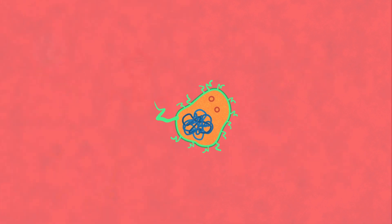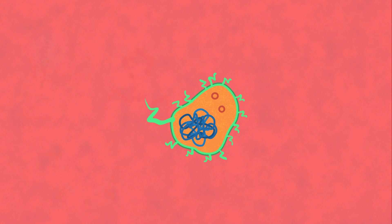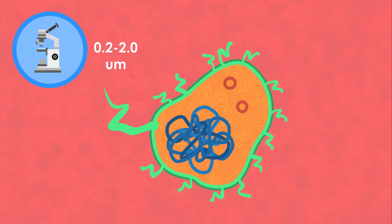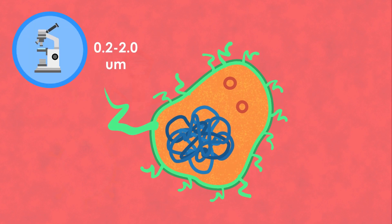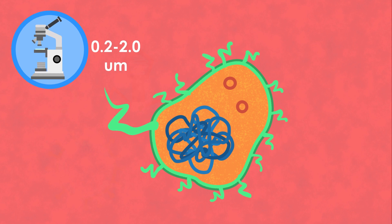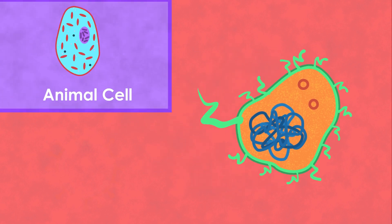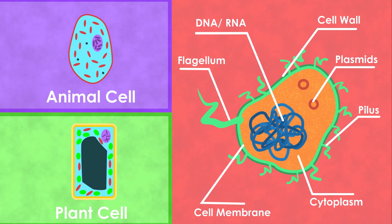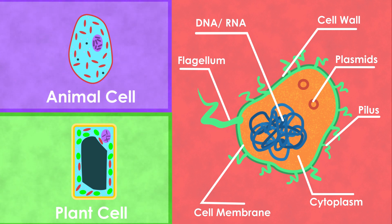Let's take a closer look at a bacterium. It's a microscopic living organism that can only be seen with a microscope. Bacteria can have a lot in common with animal and plant cells, although rather than a nucleus they have DNA strands.